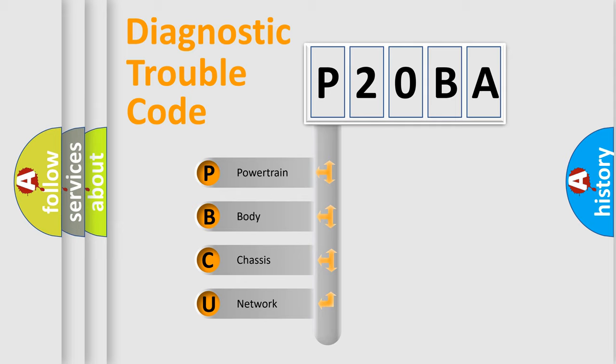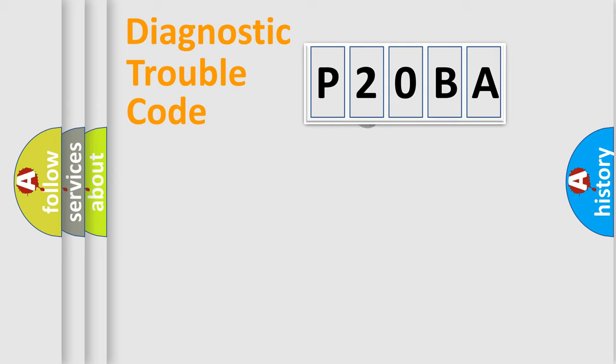We divide the electric system of the automobile into four basic units: Powertrain, Body, Chassis, and Network. This distribution is defined in the first character code.